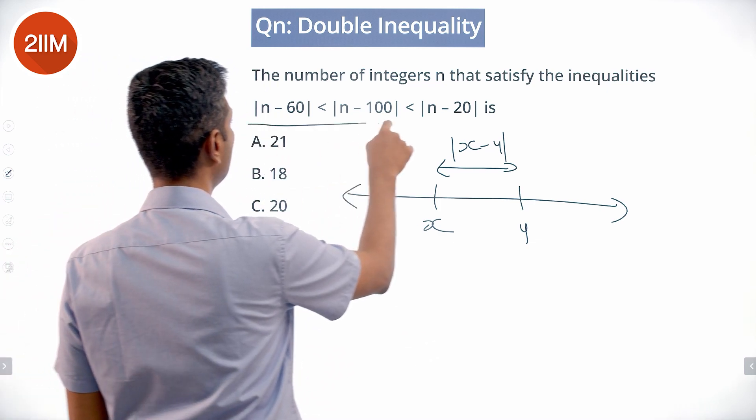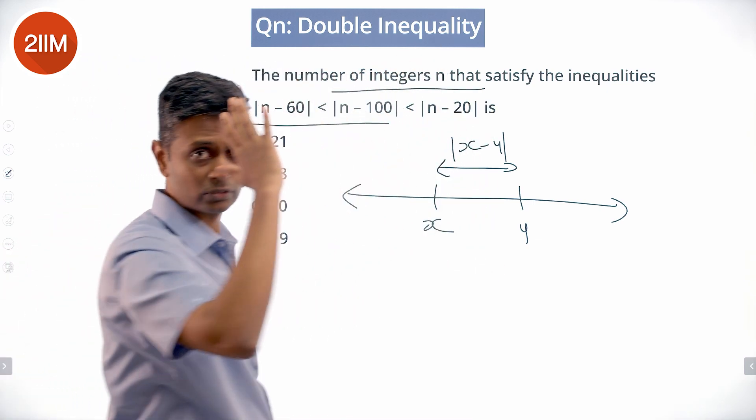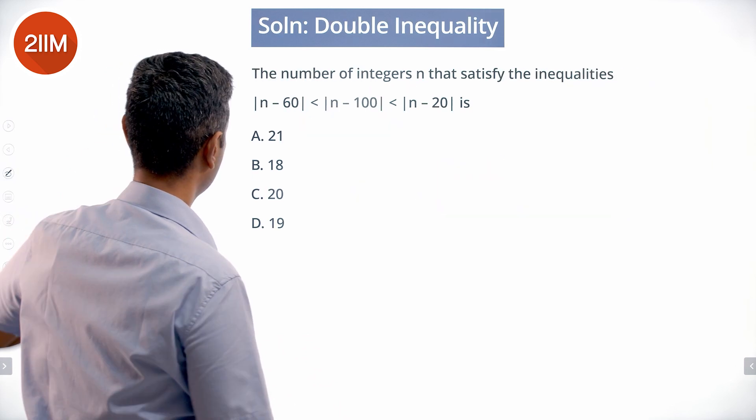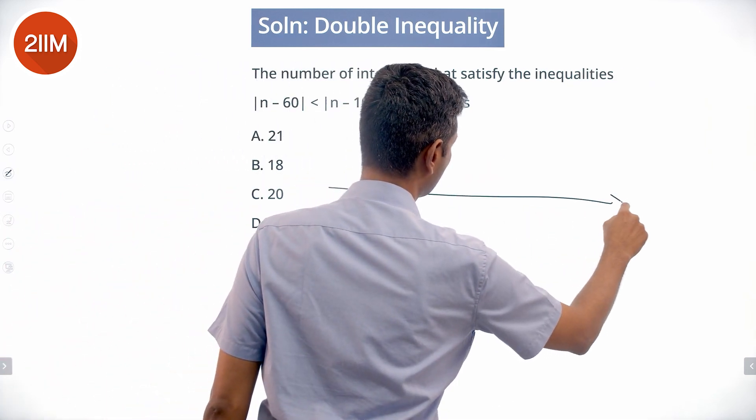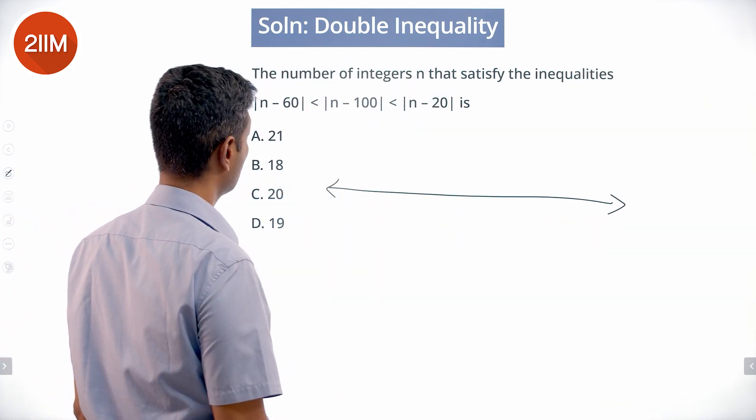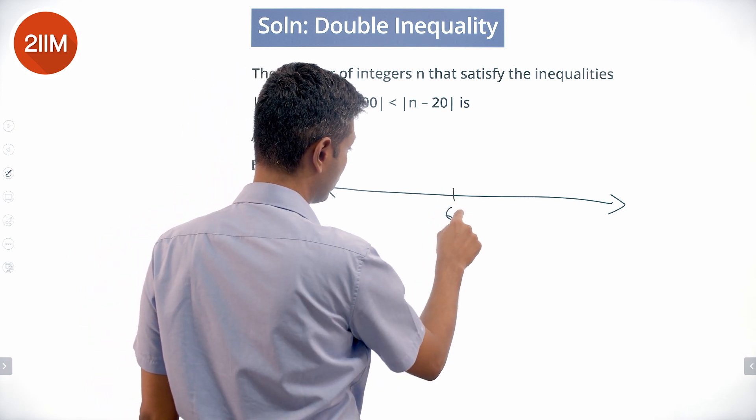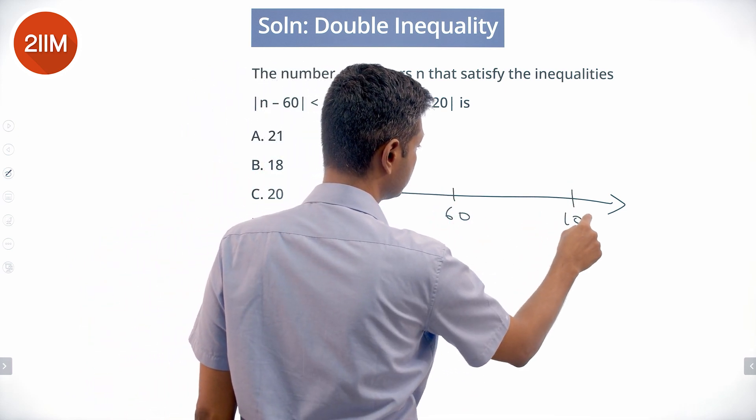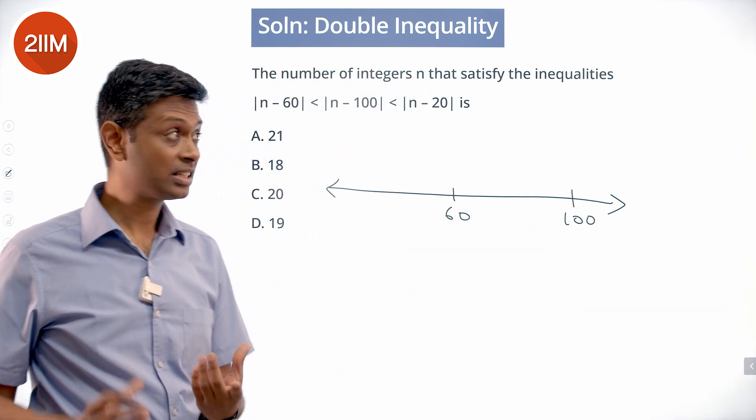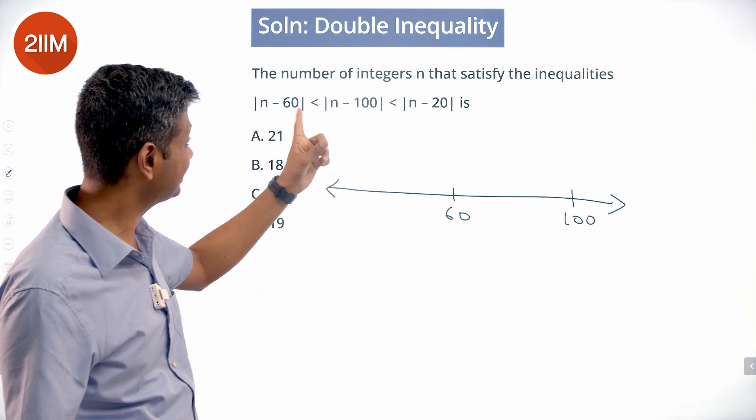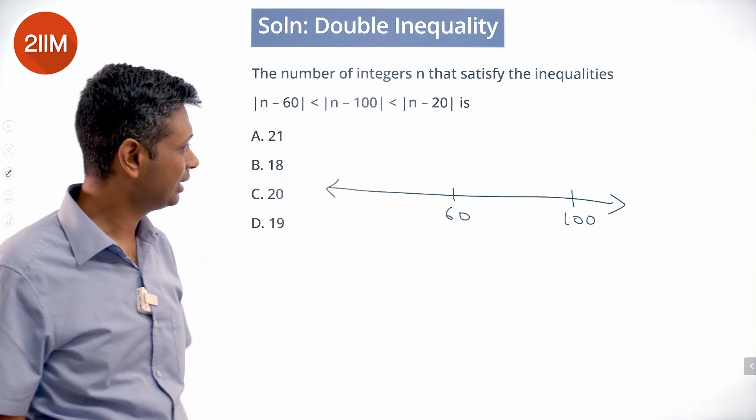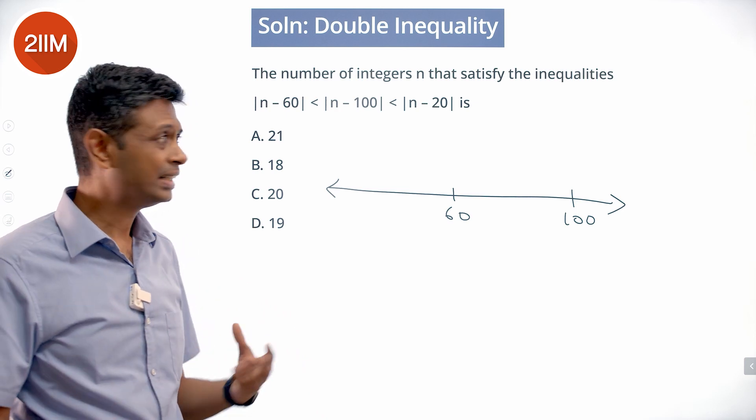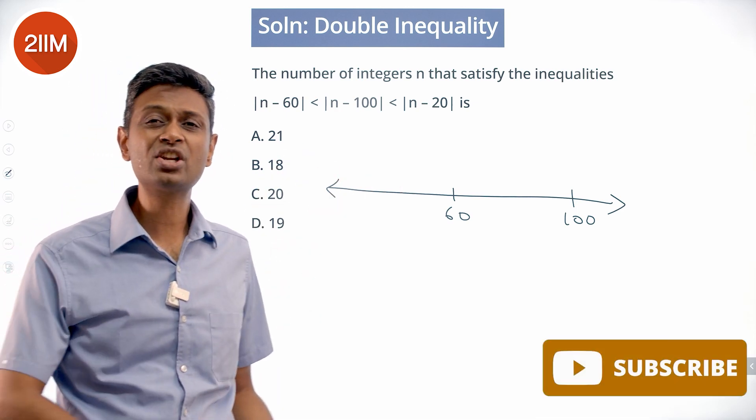Let's say |n - 60| < |n - 100|. So let's put 60 here and 100 here. So distance |n - 60| less than |n - 100|. That is, if I have n, distance from 60 is less than distance from 100, right?